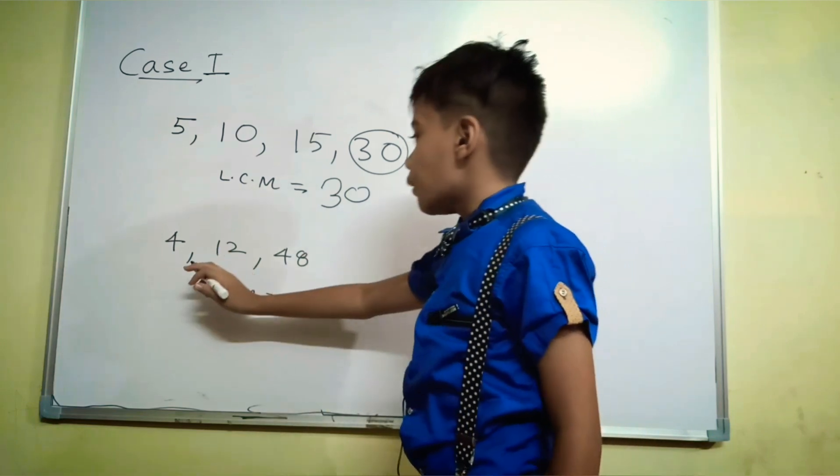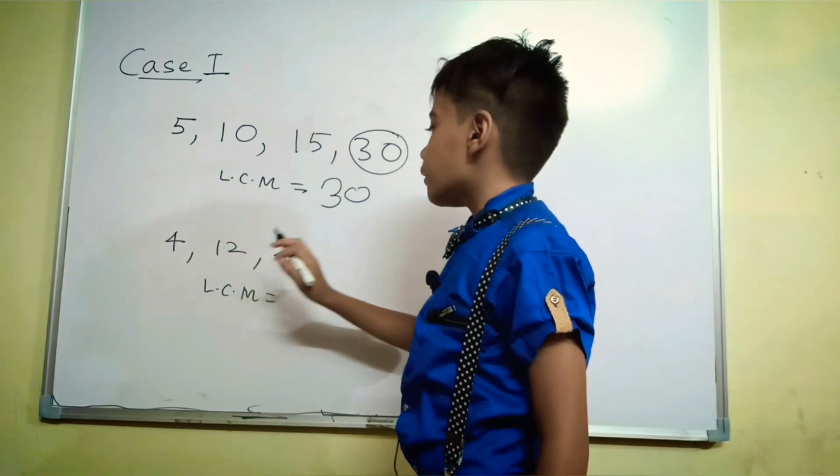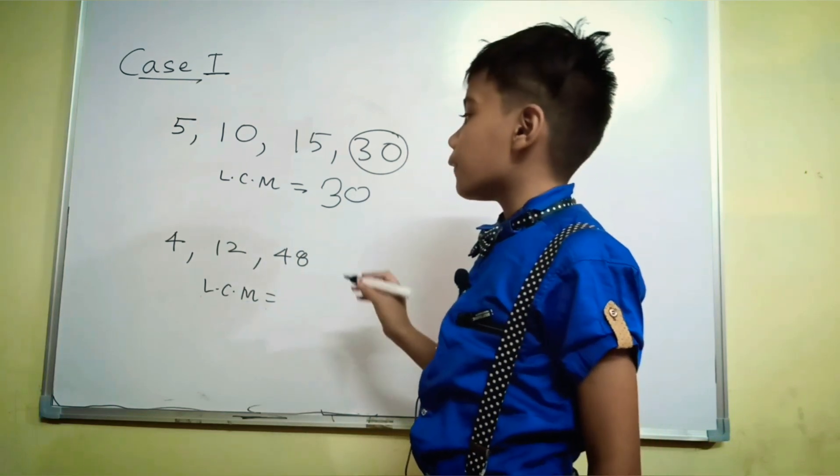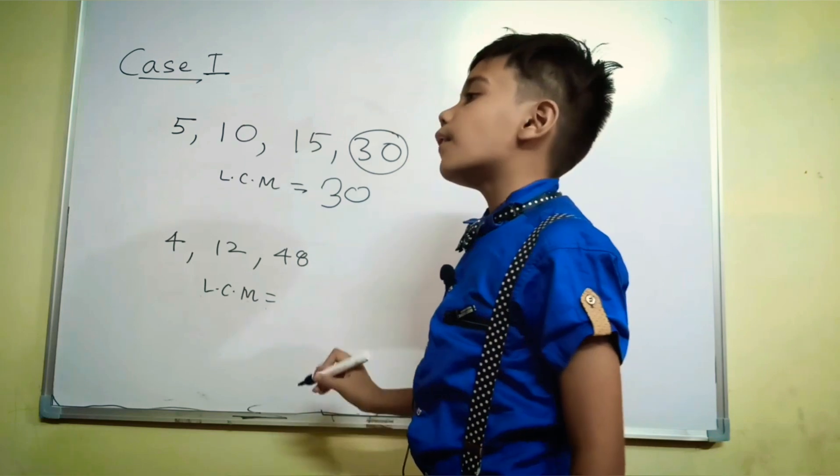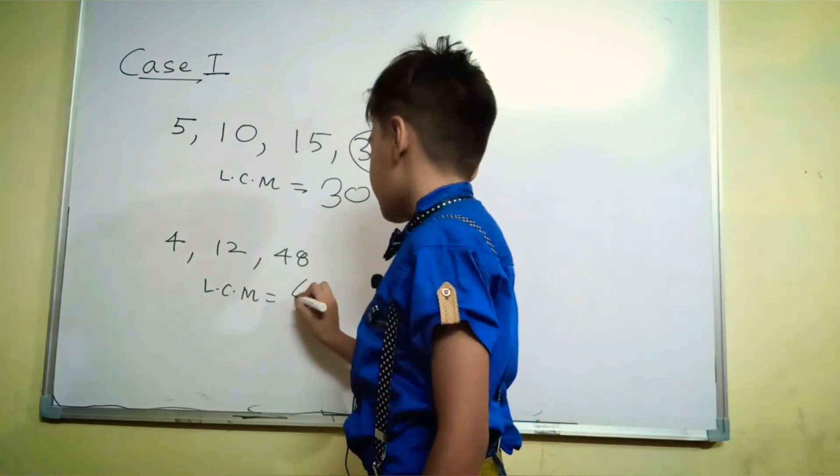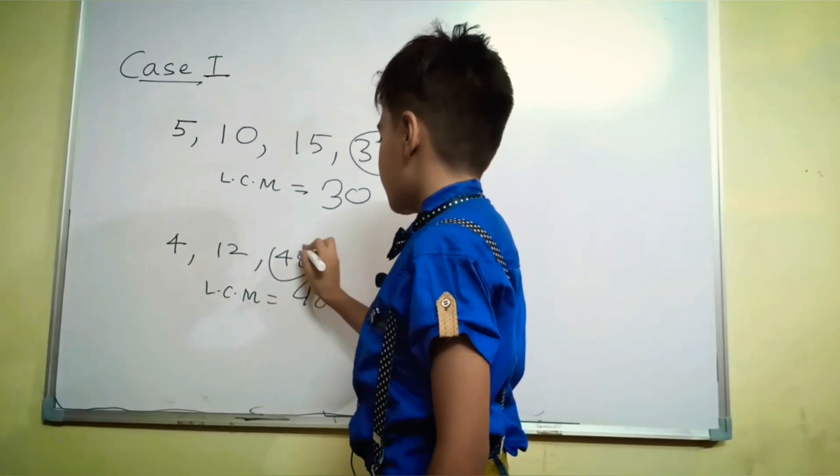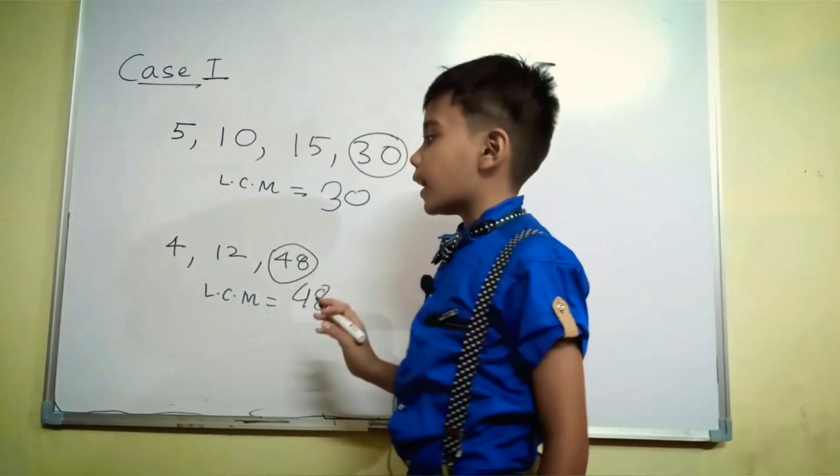Now we are having 4, 12 and 48. 48 is also divisible by 4 and 12, so our LCM is 48. This is the short way.